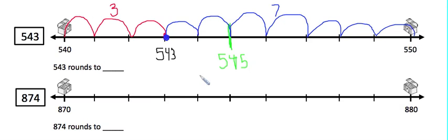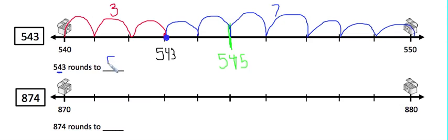So because 543 is closer to 540, that means that 543 rounded to the nearest ten — we want to round to the number in the tens place — 543 rounded to the nearest ten rounds to 540.